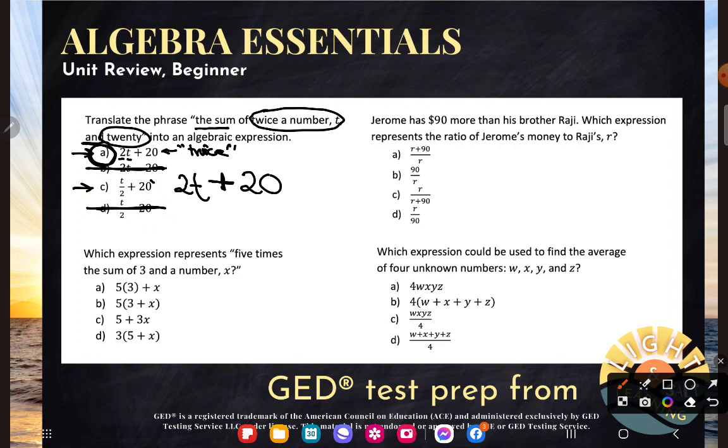Next one. Which expression represents five times the sum of a number and X? Now, I wanted to do this with you because a lot of times people will write this the exact same way. But I need you to notice something this time. It's not twice a number. This time it says five times the sum. They want you to take five and multiply it by a sum, an addition expression.